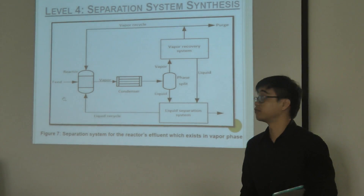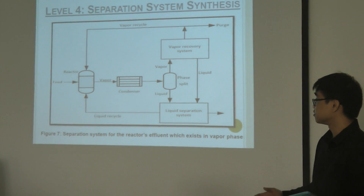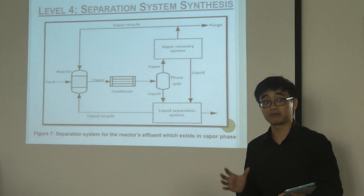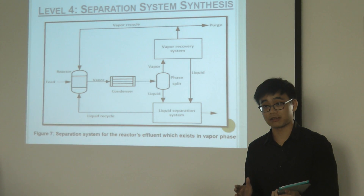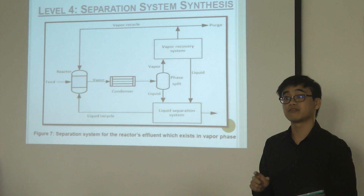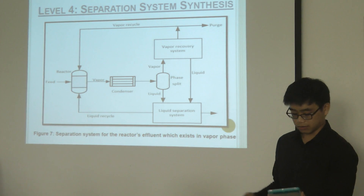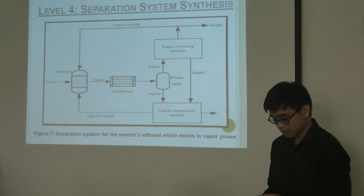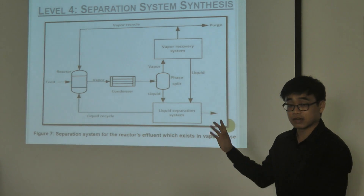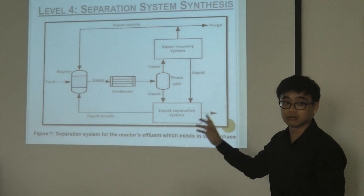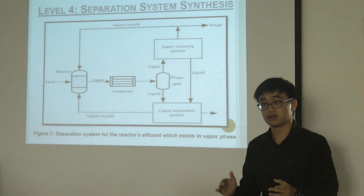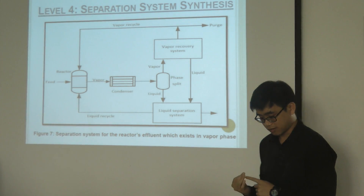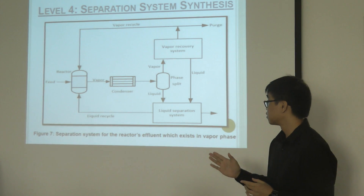Next is level four: separation system synthesis. This is the separation system for a reactor sample which exists in vapor phase. Normally there are many types of conditions that can exist: liquid, vapor, and two phases. In this system, the vapor has to be cooled down below 38°C — which is a general rule — in order to allow phase split or total condensation. High pressure would be another option if phase split cannot be achieved. If this option cannot be applied, high pressure and refrigerated partial condensation should be used.